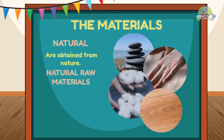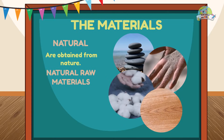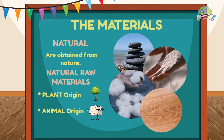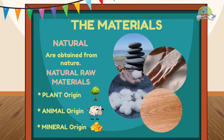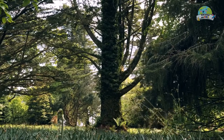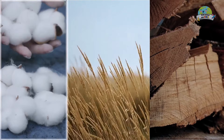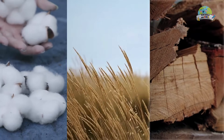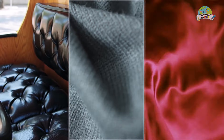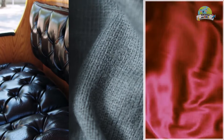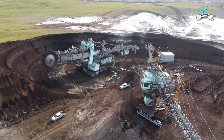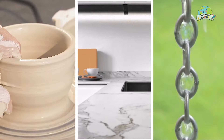These raw materials, depending on where they are obtained, can be of plant origin, of animal origin, or mineral origin. Raw materials of plant origin are obtained from plants such as cotton, cereals, or wood. Those of animal origin are obtained from animals such as leather, wool, or silk. And those of mineral origin are obtained from minerals and rocks such as clay, marble, or iron.